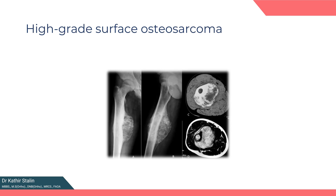The rare high-grade surface osteosarcoma appears radiographically as a mixed lytic and sclerotic aggressive surface lesion in the metaphysis or diaphysis of the long bone. Its treatment and prognosis align with those of conventional osteosarcoma and are no different from high-grade intramedullary osteosarcoma.